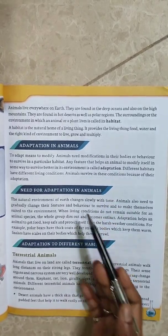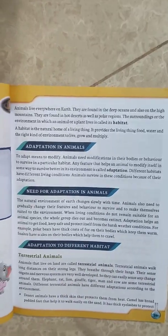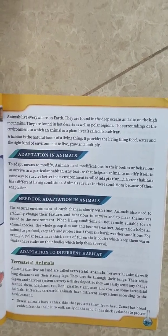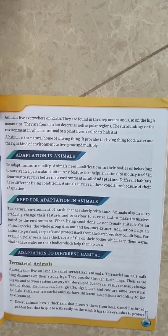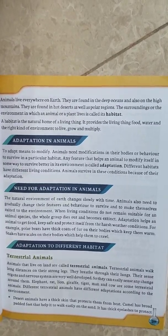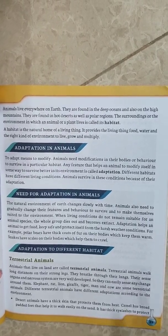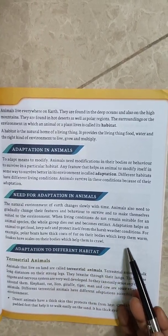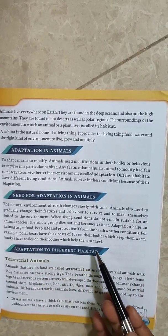Need for Adaptation in Animals: The natural environment of Earth changes slowly with time. Animals also need to gradually change their features and behavior to survive and make themselves suited to the environment. Adaptation helps an animal to get food, keep safe, and protect itself from Earth's weather conditions. For example, polar bears have thick coats of fur on their bodies which keep them warm.